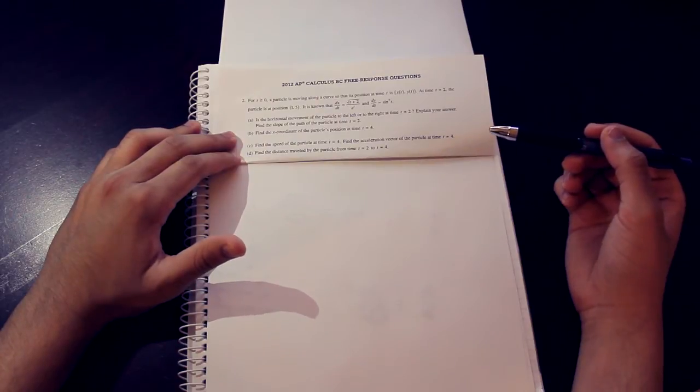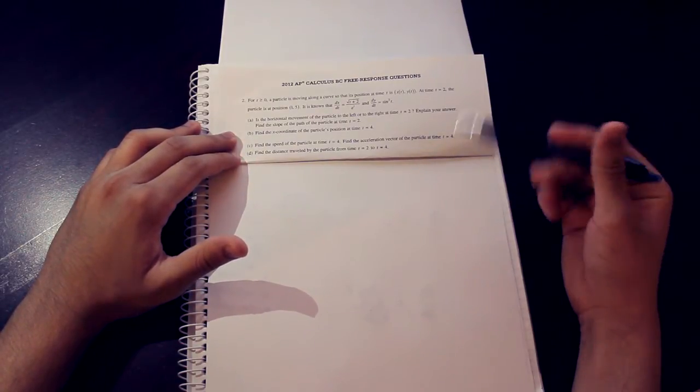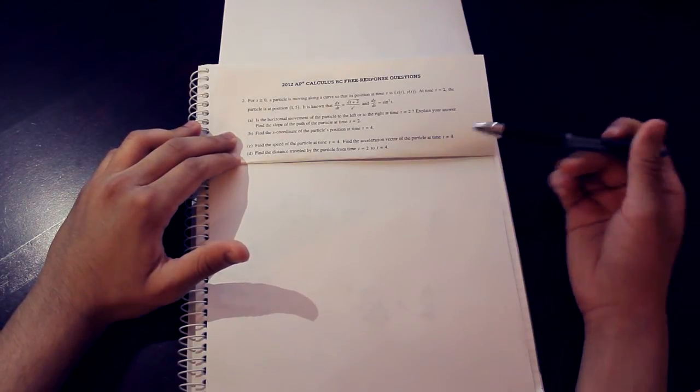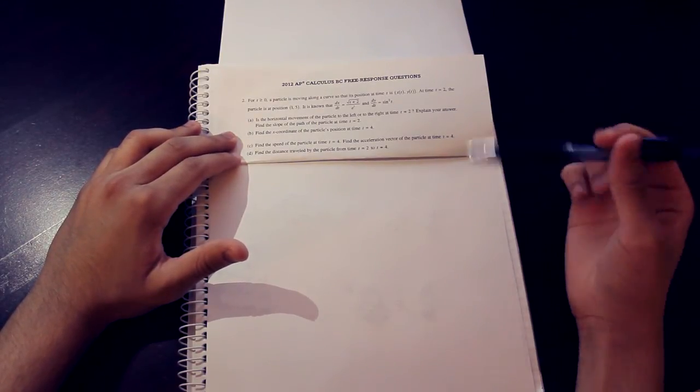Basically, we got a particle here that's moving along a curve, and we're given its initial position and the derivative of its x and y positions. Now, if we're trying to find the horizontal movement of the particle, we're going to look at dx dt.